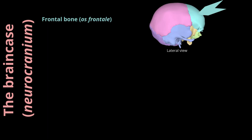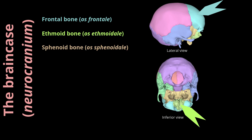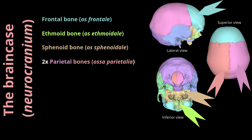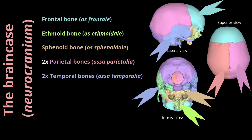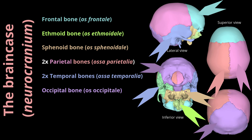The brain case (neurocranium) is made up of eight bones which include, anterior to posterior: the frontal bone (os frontale), the ethmoid bone (os ethmoidale), the sphenoid bone, two parietal bones (ossa parietalia), two temporal bones (ossa temporalia), and the occipital bone (os occipitale). Its primary function is the protection of the brain. The brain is almost entirely enclosed by the neurocranium, with the exception of the foramen magnum and other foramina at the skull base, which serve as entry and exit points for blood vessels and cranial nerves.